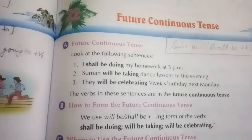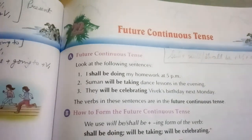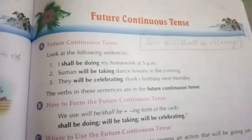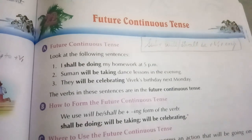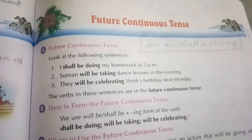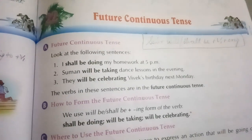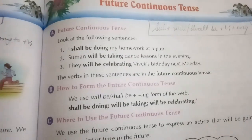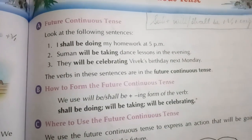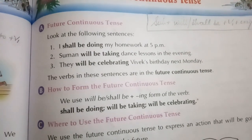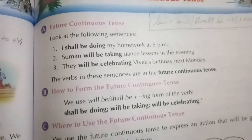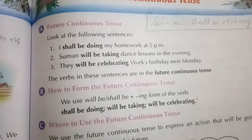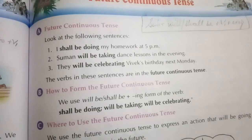Now come to the next chapter — Chapter 22: Future Continuous Tense. Future continuous tense tells you that in the future something will be happening — kuch future me ho raha hoga. For example: 'I shall be doing my homework at 5 pm.' 'Suman will be taking dance lessons in the evening.' 'They will be celebrating Vivek's birthday next Monday.'